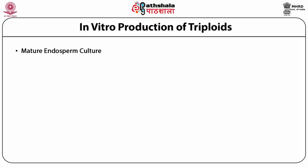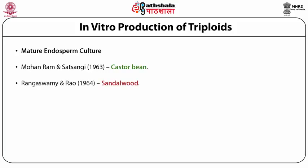But it was only in 1963 that Mohunram and Satsangi succeeded in getting some proliferation of the mature endosperm of Gastroba. They treated it with 2,4-D and it started to callous — a limited callous because it was in outside cultures. But in 1964, Rangaswami and Ra established tissue cultures of sandalwood. And after that, you have a number of examples like Croton, Jatropha, Putranjiva where tissue cultures of mature endosperm have been established.